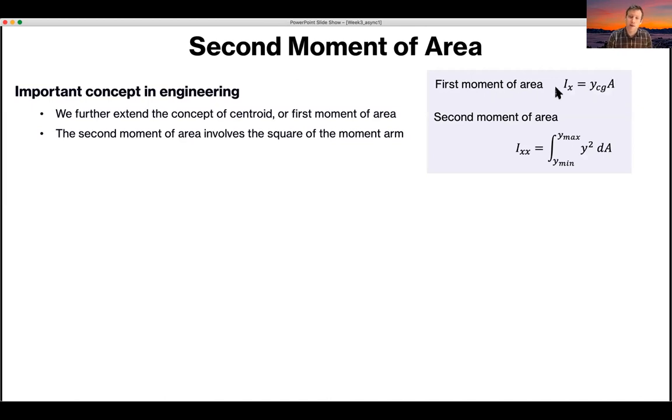For instance, the first moment of area is the center of gravity times the area. In this case, we're looking at the rotation around the x axis, so it's the y direction. The second moment of area. Don't worry about why we'd want to use this yet, but just accept what it is. The second moment of area is exactly the same, except that it's y squared.